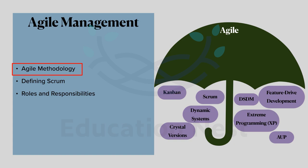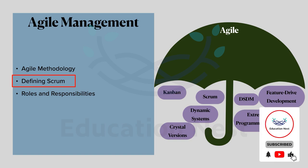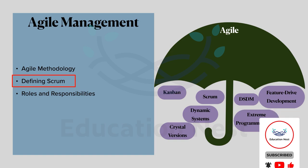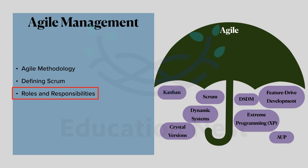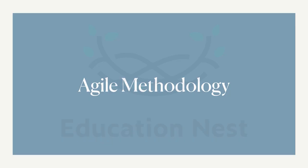First we'll cover agile methodology — introducing the agile way of working and how it differs from traditional approaches. Then we will define Scrum, which is a set of rules and practices based on three key pillars: transparency, inspection, and adaptation. We'll understand Scrum in depth in the lessons to come. Finally, we'll cover roles and responsibilities — who is the product owner, who is the scrum master, and who is the development team, and how they differ from traditional stakeholders.